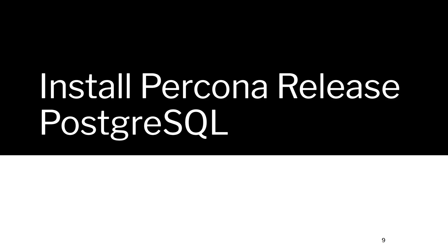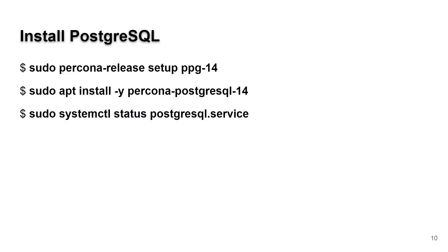Now comes the installation of Postgres. Real simple — run sudo percona-release and tell it to set up ppg-14, which is for PostgreSQL 14. Then use apt install percona-postgresql-14, and then we can check to see that it's actually installed and running.